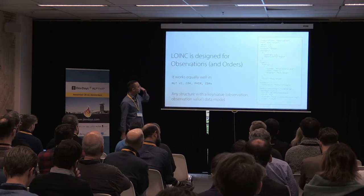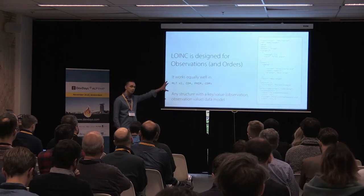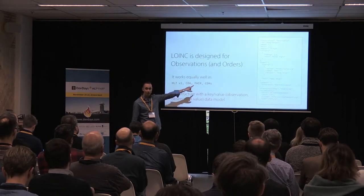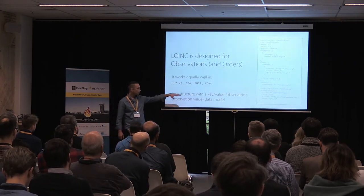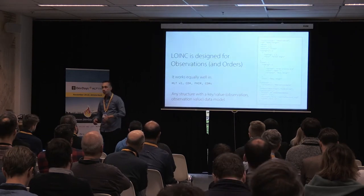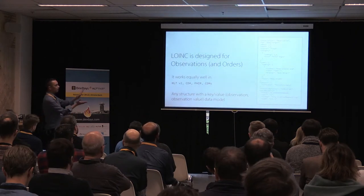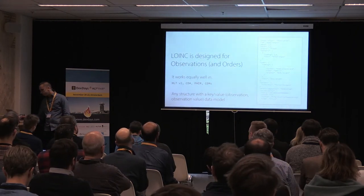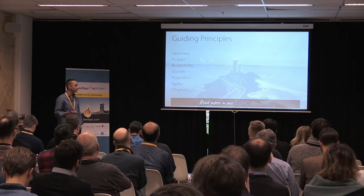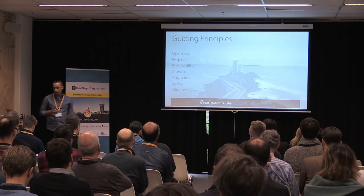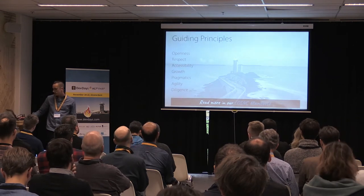Here we're interested in FHIR and specifically the observation resource. You've got one place — observation.code — where you can say what this measurement is. A simple example is body height. Then we have another place where we store the result value and its associated units of measure. This is the main purpose of LOINC: to be the universal code that identifies what these measurements are. We have a similar philosophy to FHIR in terms of how we develop LOINC, and if you want to read more about it, you can check out the LOINC manifesto on the website.